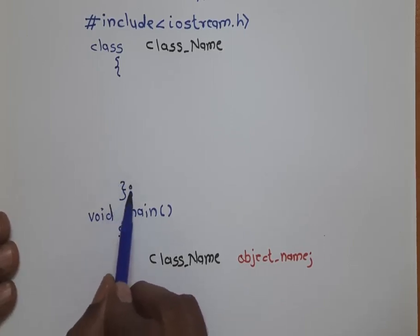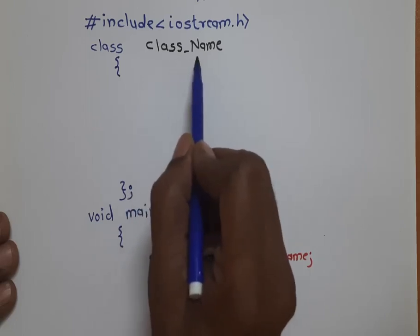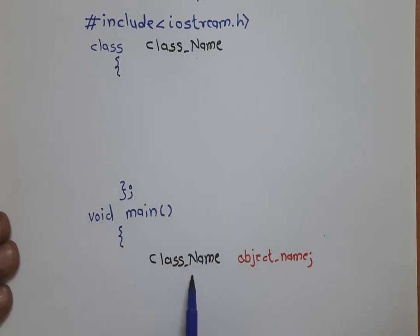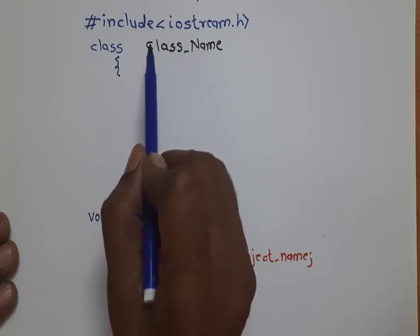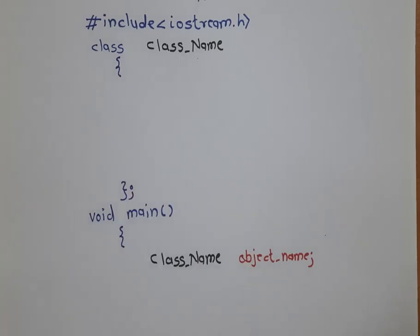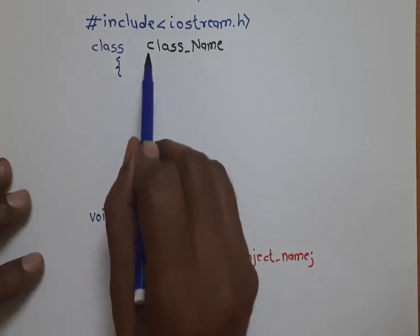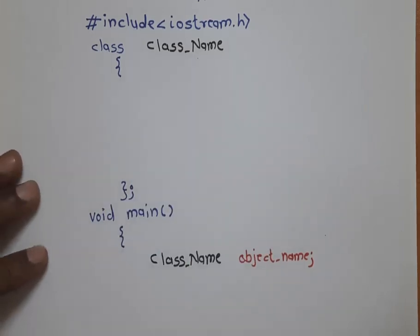The class name you give here must match wherever you reference it. For example, I have given 'C' and 'N' as capitals. If your class name is a single word, give the first letter as capital. This is not compulsory but as a standard convention in the software industry, the first letter of a class name is given as a capital. If the class name has multiple words, then every word's first character is given as a capital.